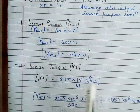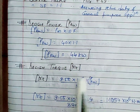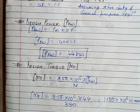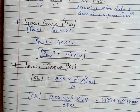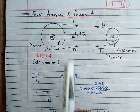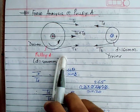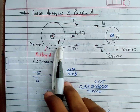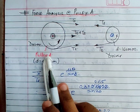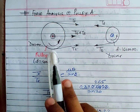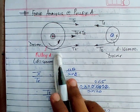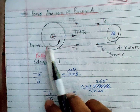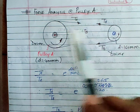The torque equation has already been derived in class. Substituting the values, you can get the design torque acting on the shaft. Having calculated the design torque, we can now analyze the forces at different loading points on the shaft. The loading points are at A (V-belt pulley) and at C (helical pinion). We will first discuss what happens at point A.